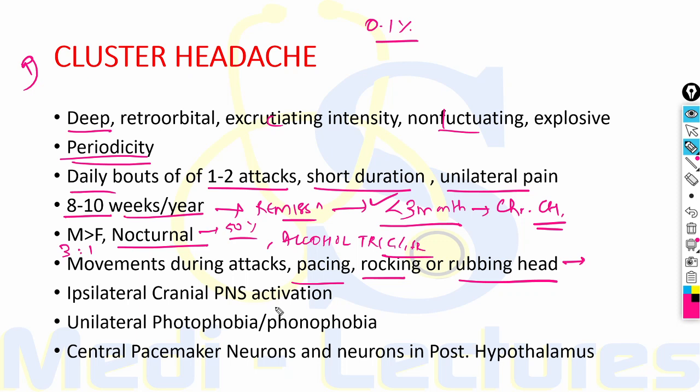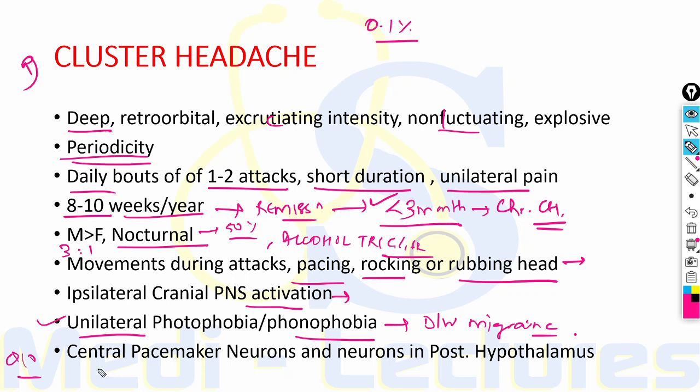There is ipsilateral cranial parasympathetic nervous system activation leading to lacrimation, conjunctival injection, nasal congestion, and oral fullness on the ipsilateral side. There is also unilateral photophobia and phonophobia — differentiated from migraine which has bilateral photophobia and phonophobia. Cluster headache is a disorder involving the central pacemaker neurons in the posterior hypothalamus.